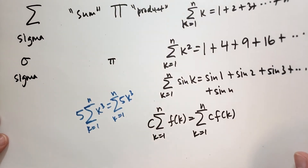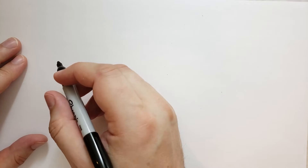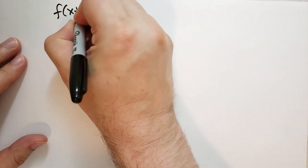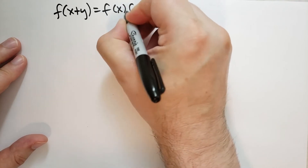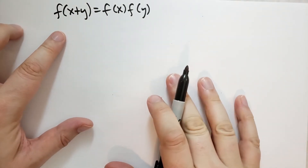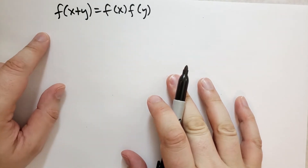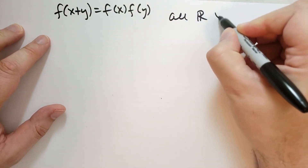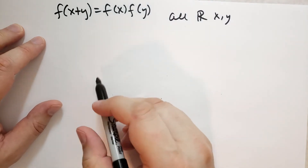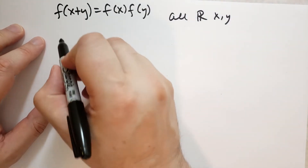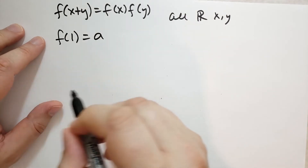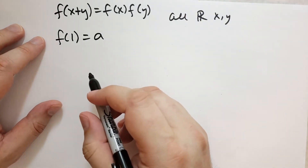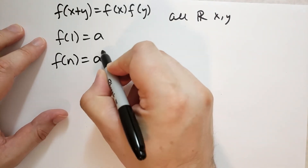Let's prove another assertion about all integers greater than or equal to 1. Suppose f is a function defined for all real numbers such that f(x+y) = f(x)·f(y) — the sum input gives the same as the product of outputs. We define f(1) to be some constant a, and we want to prove by induction that f(n) = aⁿ.